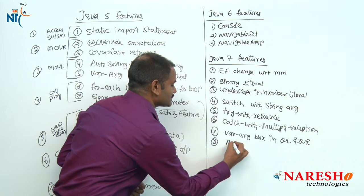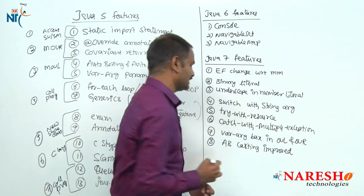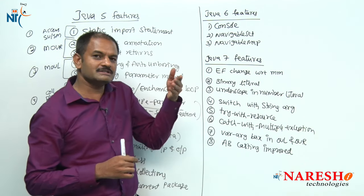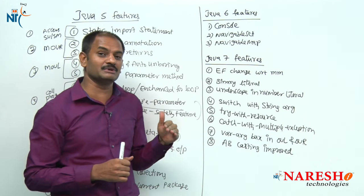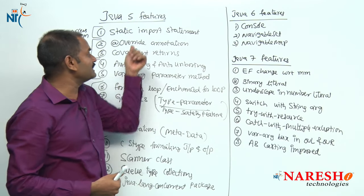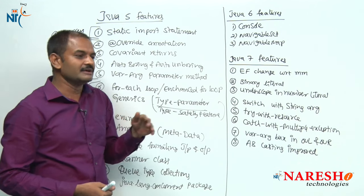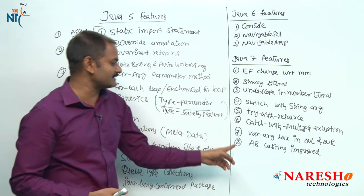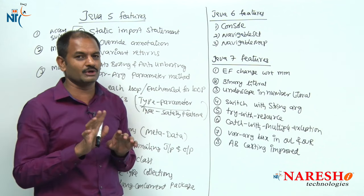The eighth point is that auto-boxing casting is improved. Previously, if you wanted to cast using auto-boxing, you first had to cast to Integer and then assign to the primitive type int. From Java 7 onwards, you can directly use the cast operator int — no need to write Integer explicitly. This is an improvement in auto-boxing casting.